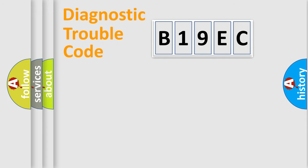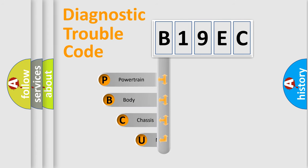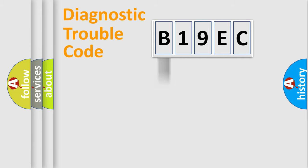First, let's look at the history of diagnostic fault code composition according to the OBD2 protocol, which is unified for all automakers since 2000. We divide the electric system of the automobile into four basic units: Powertrain, Body, Chassis, and Network. This distribution is defined in the first character of the code.